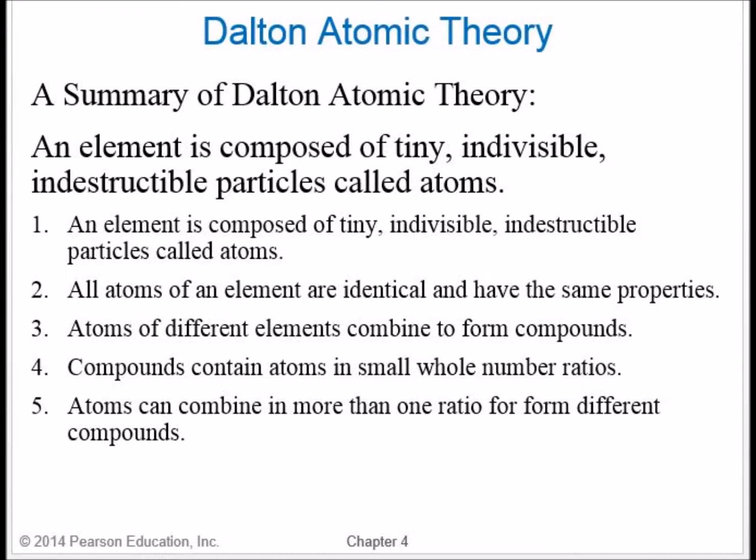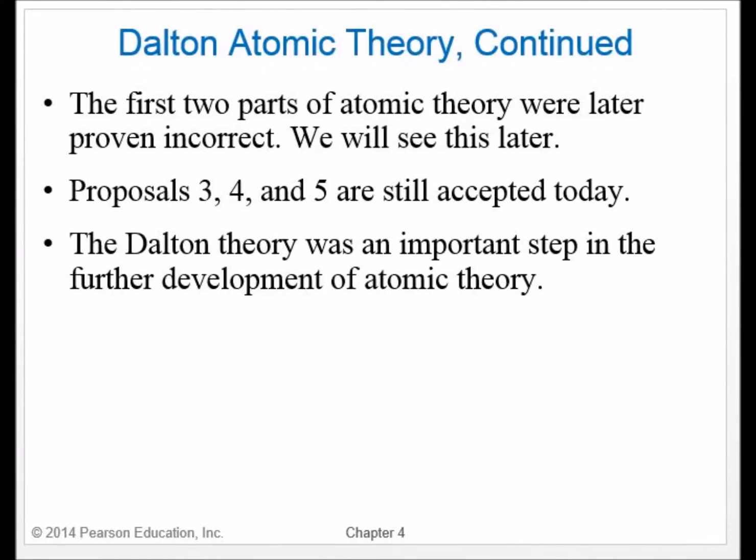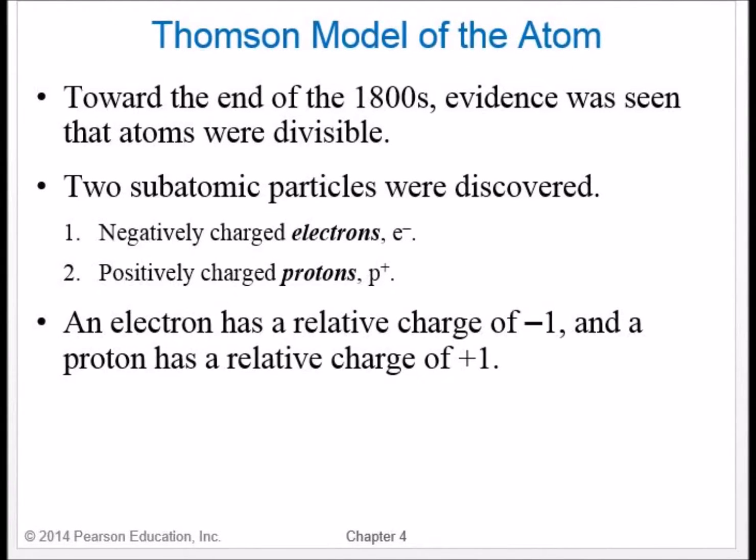The next one, number five, atoms can be combined in more than one ratio to form different compounds. This is a typo on this screen, so that's why I was stuttering. But again, atoms can combine in more than one ratio to form different compounds. So in other words, I can take hydrogen and oxygen to form H2O. I can take those same two elements to form OH to give me hydroxide ions. I can also take two hydrogens, two oxygens to form H2O2.